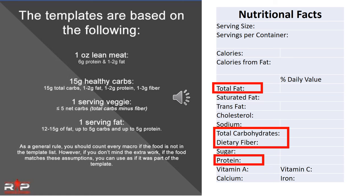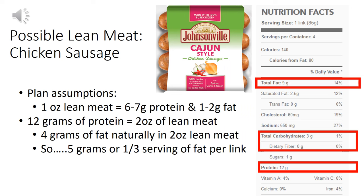Let's look at our first food — a possible lean meat option: chicken sausage. I get asked a lot if chicken sausages can be used as a lean meat option in the morning. Let's look at our plan assumptions. One ounce of lean meat is going to have six to seven grams of protein and one to two grams of fat.